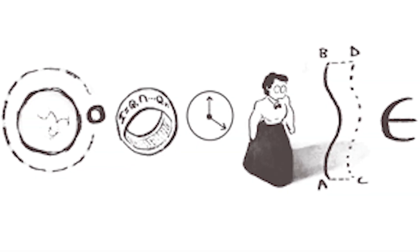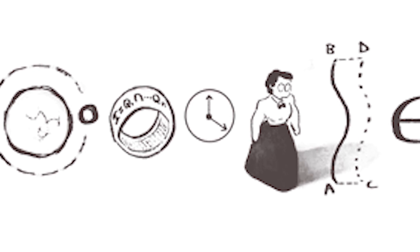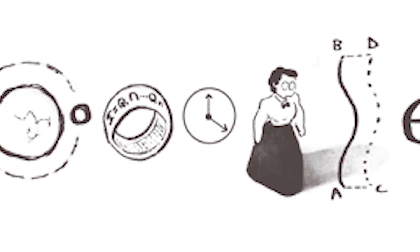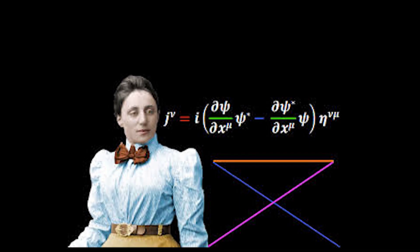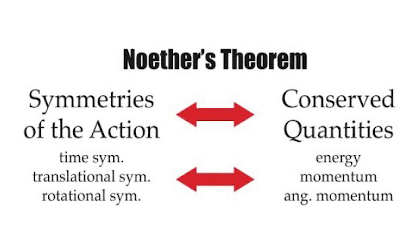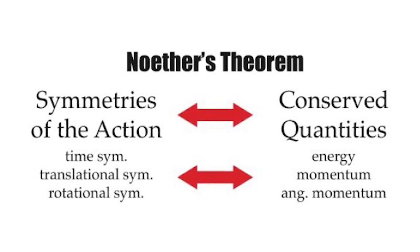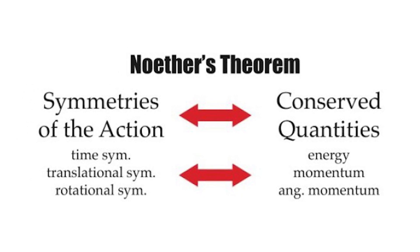Noether studied and developed the algebras of rings and modules in the beginning of 20th century. She ingeniously proved a very famous theorem which links the symmetries of actions and the conservation laws of physics.